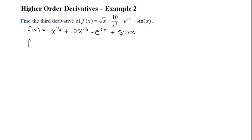Now we can start taking our first derivative. For the first term, we have x to the power of a half. When taking the derivative, we bring that power down — so we have a half — then subtract 1 from the power, giving x to the power of negative a half. For the next term, we have 10 times x to the power of negative 3. Be careful because multiplying 10 by negative 3 changes the sign out front, so this becomes minus 30x to the power of negative 4.